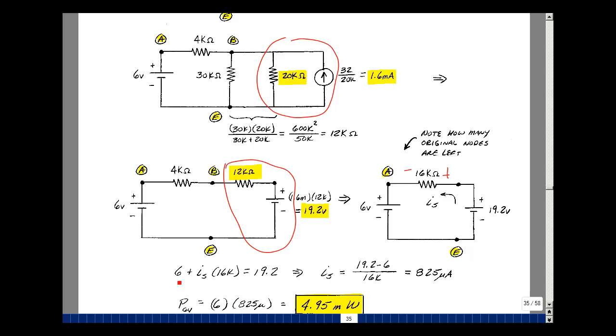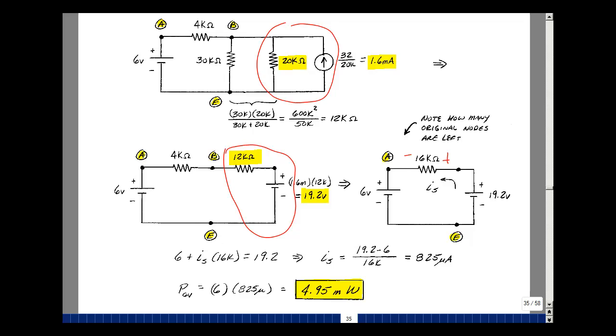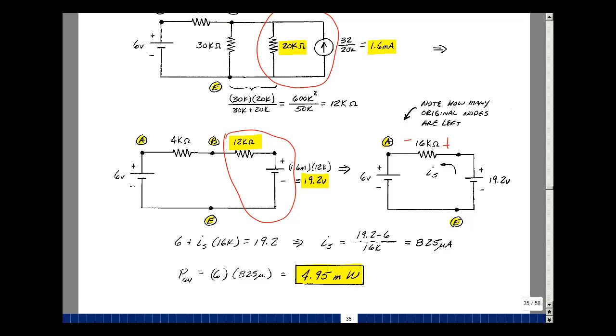So 19.2 minus 6 divided by 16K is that current, which is 825 microamps, and so the power absorbed would be that current times the voltage of the battery, 6 volts, so about 5 milliwatts. This is an example of doing a source transformation, series in parallel resistances, to solve for an unknown.